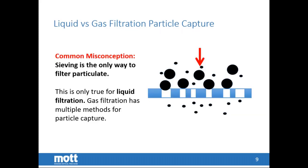Liquid filtration is basically a sieving process — like the lint catcher in your dryer, it catches material on the surface of the strainer. With gas filtration, it is much more complicated: sieving is only one of the capture mechanisms. Many customers believe that anything captured on the surface defines how the filter works, which is true for liquid, but for gas we rely more on depth filtration rather than just surface capture of particulate.